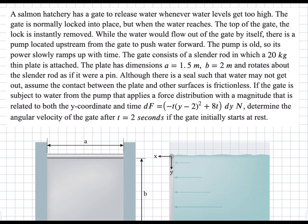In this problem, we're asked to find the angular velocity of the gate after a time of 2 seconds, given the force distribution df, which is a function of y and t. We're also told that the gate consists of a slender rod which is 20 kilograms, on which a 20 kilogram thin plate is attached. We're given the dimensions: a = 1.5 meters and b = 2 meters.